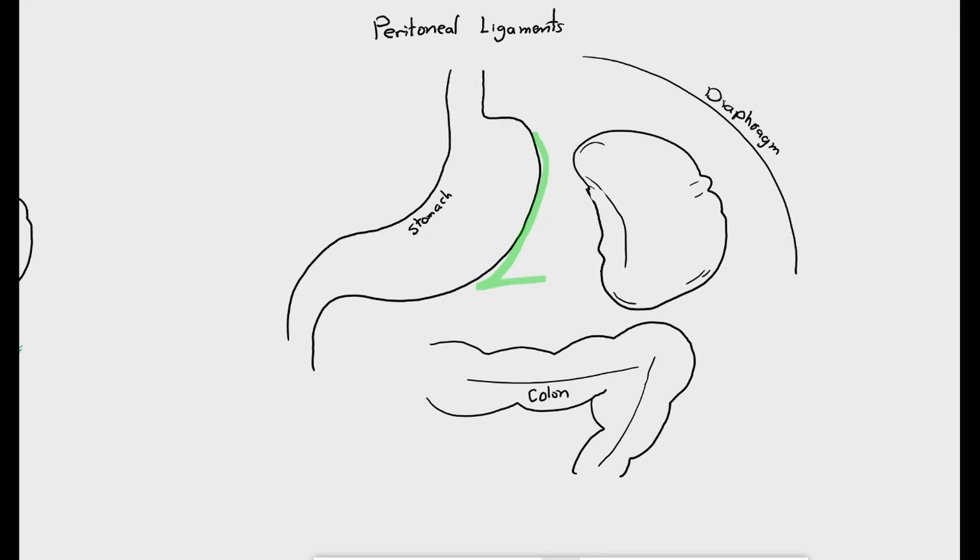Now we will move to the peritoneal ligaments of the spleen. The first important peritoneal ligament is the gastrosplenic ligament. It is a triangular peritoneal fold between the greater curvature of the stomach and the medial border of the spleen. It contains the short gastric vessels and the left gastroepiploic vessels.